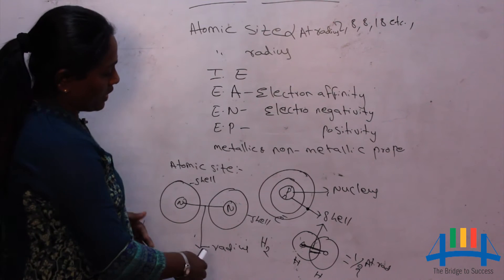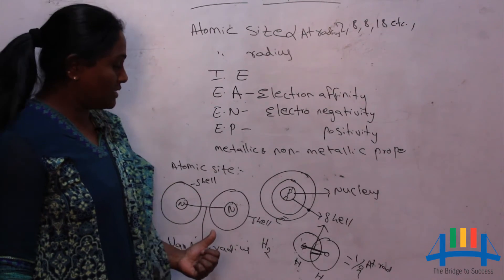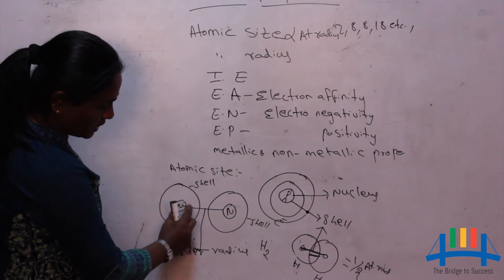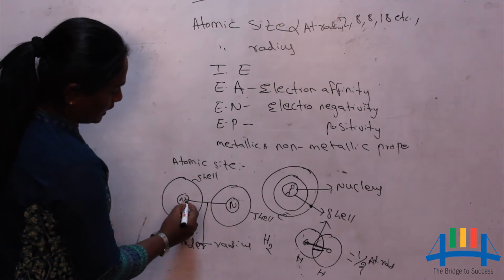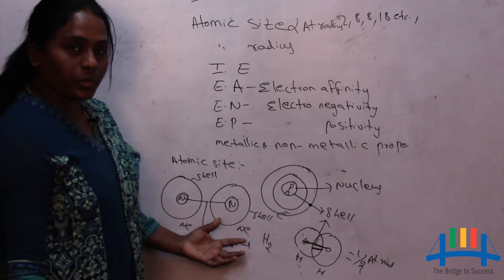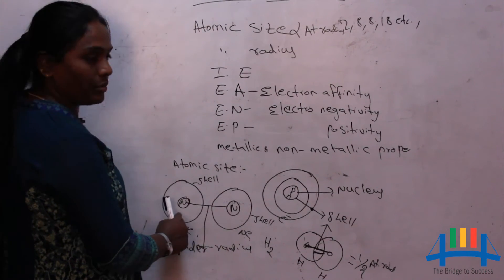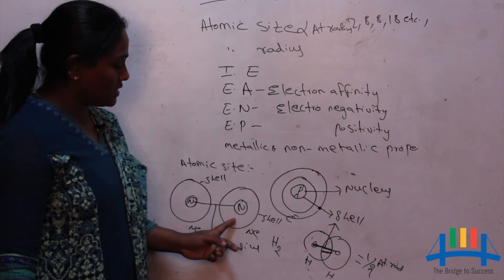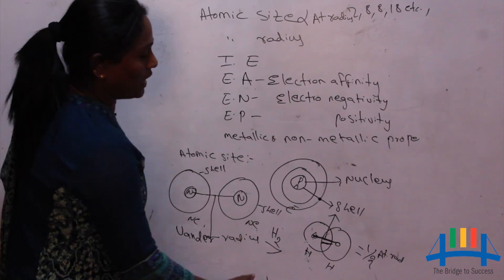One more radius is called Van der Waals radius. Van der Waals radius is generally present in non-bonded gaseous atoms — that means there is no bond between these two elements, but their electron clouds are overlapping with each other. It is the nucleus of one element and the nucleus of another element. For example, these two are neon, which are noble gases. Half of the distance between the two nuclei of two non-bonded elements is called the Van der Waals radius. Van der Waals radius is always greater than the covalent radius.